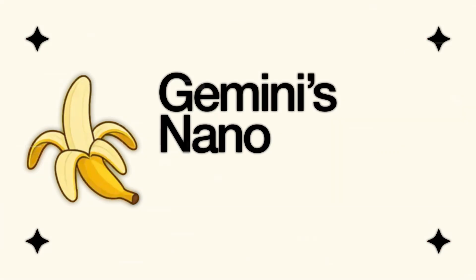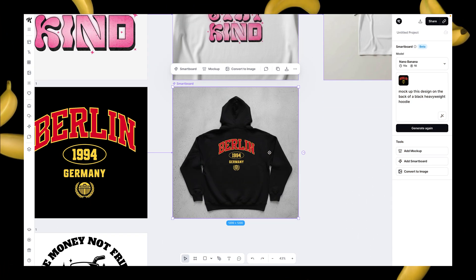Gemini's Nano Banana model is absolutely incredible — the accuracy and speed are completely unmatched, blowing some already very good AI models out of the water. Today I wanted to put it to the test specifically in mocking up different designs with a lot of detail, because one of the things current AI models really struggle with is preserving details and not changing things you're not asking it to change. This is really where Nano Banana shines.